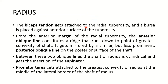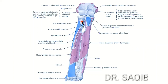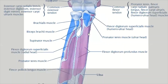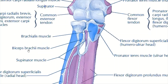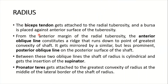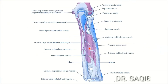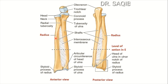For attachments: the biceps tendon gets attached to the radial tuberosity, and a bursa is placed against the anterior surface of the tuberosity. From the anterior margin of the radial tuberosity, the anterior oblique line constitutes a ridge that extends to the point of greatest convexity of the shaft. This is mirrored by a similar but less prominent posterior oblique line on the posterior surface of the shaft. Here you can see the anterior oblique line and the posterior oblique line.